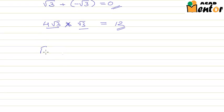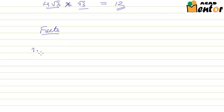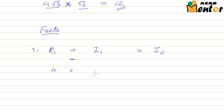Let me take you through a few facts about operations on irrational numbers. The first fact: the sum or difference of a rational number and an irrational number is always irrational. That means if I have a rational number r1 and an irrational number i1 and I perform addition or subtraction, the result will always be an irrational number. For example, 4 plus √3 gives 4 plus √3, which is irrational. The same holds for subtraction.